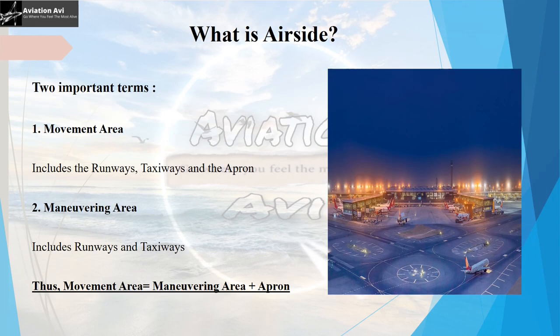Before we understand what air side is, there are two important terms to identify. Number one: the movement area, which includes the runways, the taxiways, and the apron — all three combined form the movement area. Number two: the maneuvering area, which includes only the runways and the taxiways. So the movement area equals the maneuvering area plus the apron.